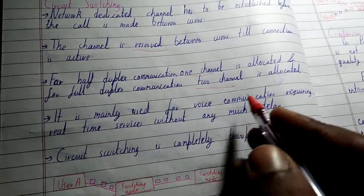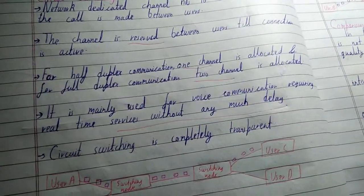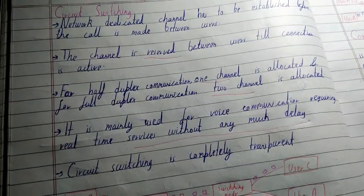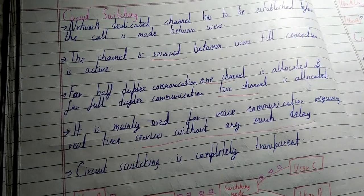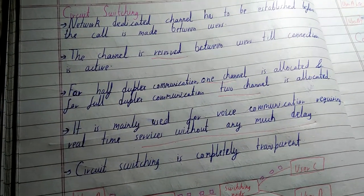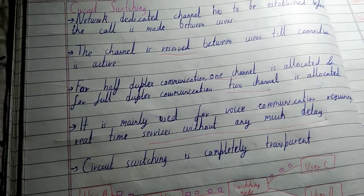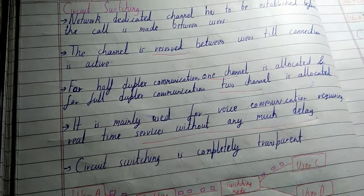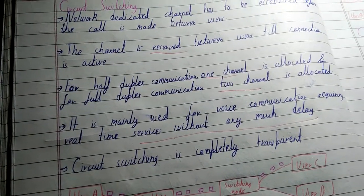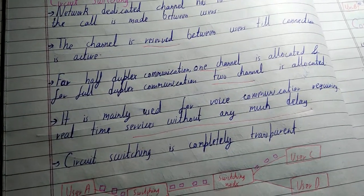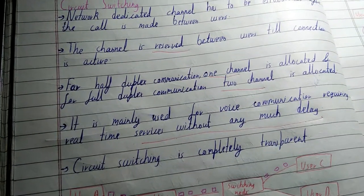Circuit switching is mainly used for voice communication requiring real-time services without much delay. For example, when you call your friend, you press the dial button, enter your friend's number, and press call. The ring goes, that person picks up, and a connection is maintained. Then you start communicating, and even if you are not talking, it doesn't matter — the call stays connected.